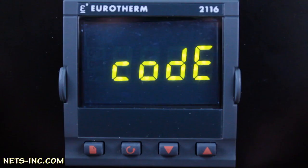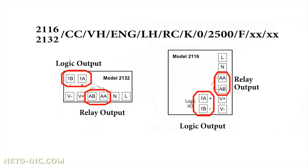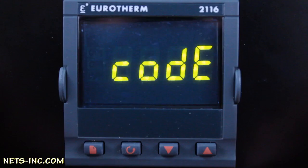This video tutorial will demonstrate the basic configuration level setup of a Eurotherm 2132 or 2116 controller. The 2132 or 2116 is a fixed hardware configuration instrument, which means it comes standard with a logic output on terminals 1A and 1B, and a relay output on terminals AA and AB. For this demonstration, we will consider it set up as a heat or cool controller, with the logic output as the heating output, the relay output as the cooling output, and the process input as a type K thermocouple in degrees Fahrenheit.